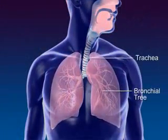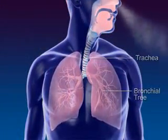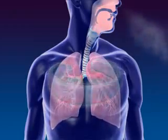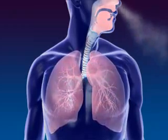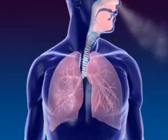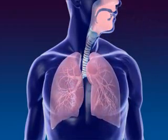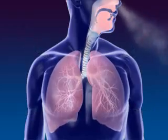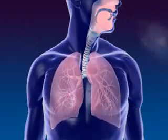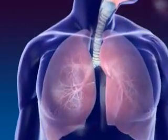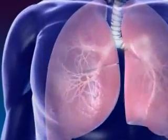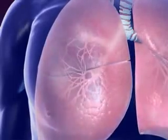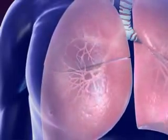The trachea, or windpipe, connects the larynx to the bronchial tree. The cartilage rings of the trachea prevent the trachea from collapsing. Lungs are spongy tissue with alveoli and blood capillaries. Breathing occurs because of the expansion and contraction of the lungs.